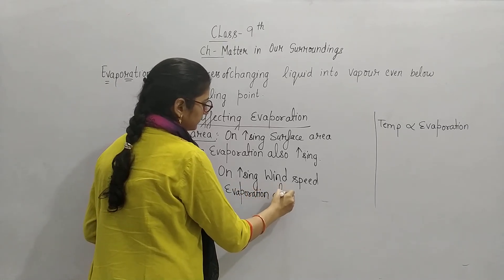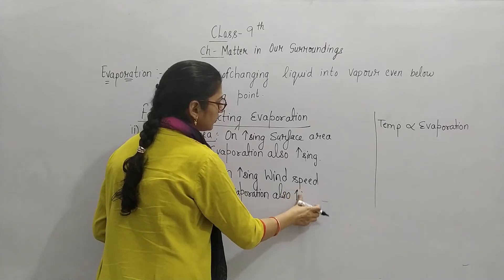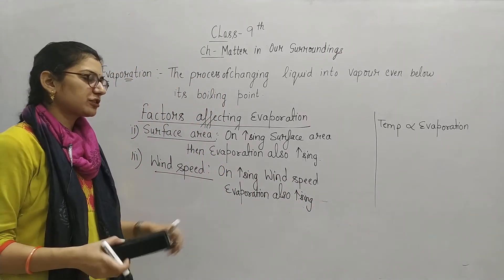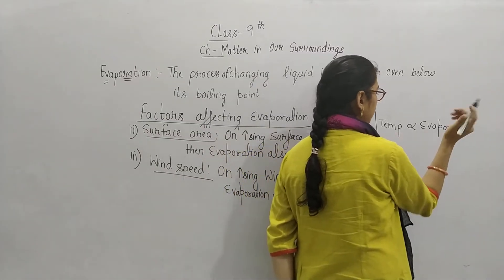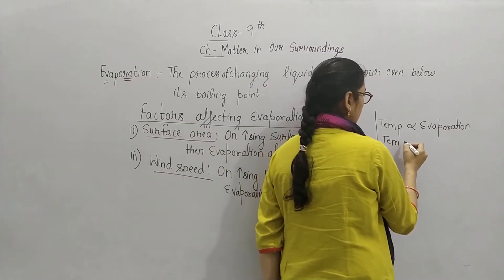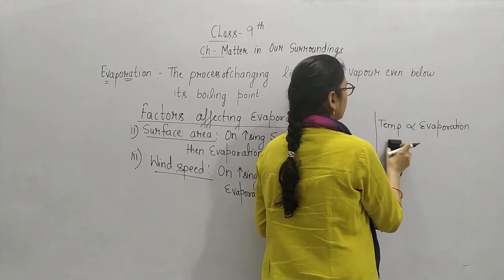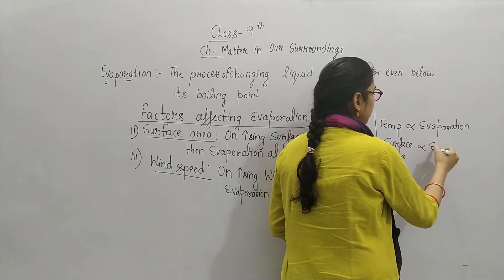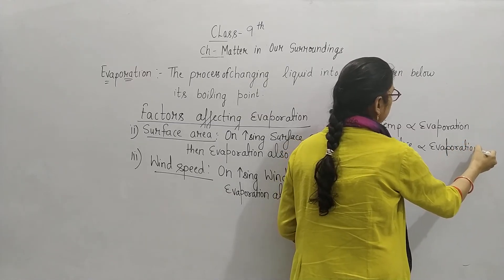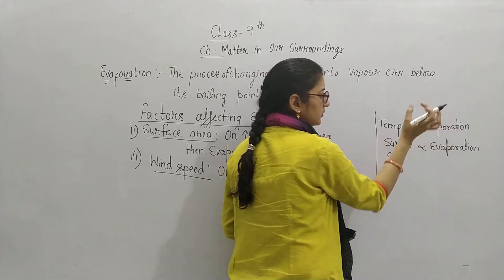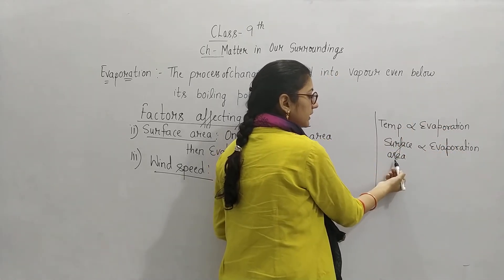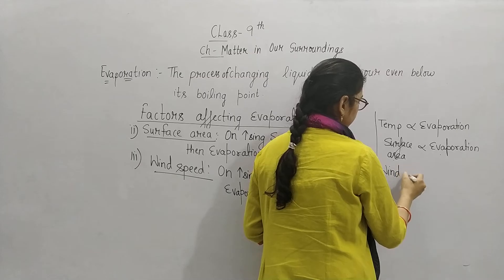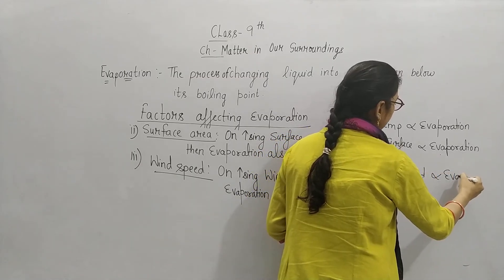अगर wind speed increase करेगी तो आपका evaporation process fast होगा, अगर wind speed slow हो जाएगी तो evaporation भी कम होगा. तो हमने देखा temperature directly proportional है evaporation की, surface area भी directly proportional है. Directly proportional का मतलब — अगर आप एक में changes कर रहे हैं तो दूसरे में भी same होगा. Wind speed भी आपका directly proportional है evaporation की.